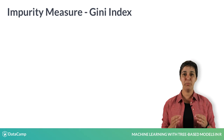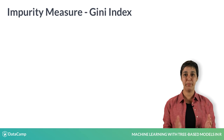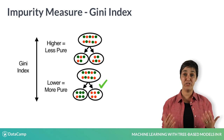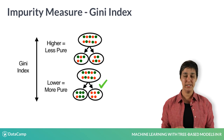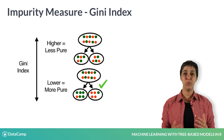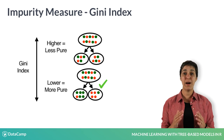A common impurity measure used for determining the best split is the Gini index. The lower the Gini index, the higher the purity of the split. So the decision tree will select the split that minimizes the Gini index.